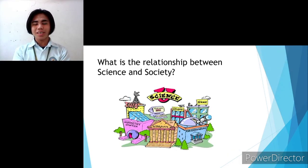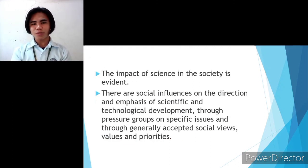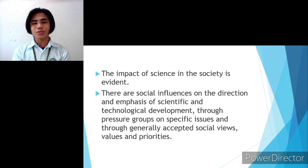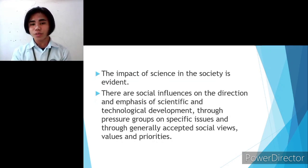This is the last part of the topic — the relationship between science and society. The impact of science on society is evident because it has actually happened. There are social influences on the direction and emphasis of scientific and technological development, through pressure groups on specific issues and through generally accepted social views, values, and priorities. Society is a place where science makes things possible, where science makes procedures for development, and where science educates people.